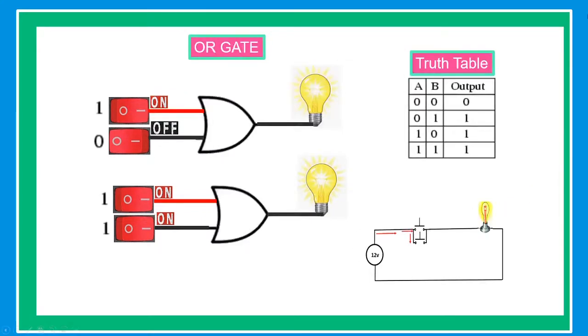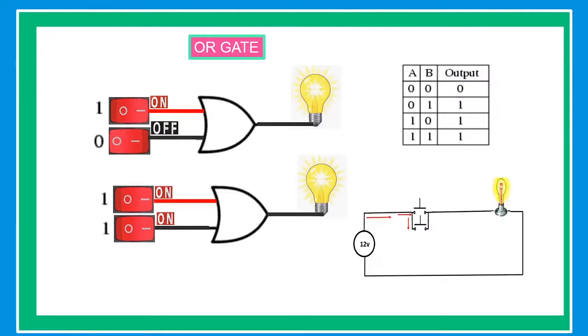Our next topic is the OR gate. The OR gate gives an output of one if either of the two inputs is one. It gives zero otherwise.